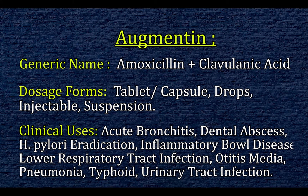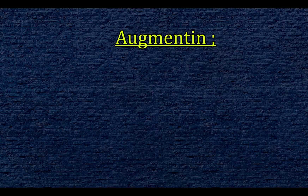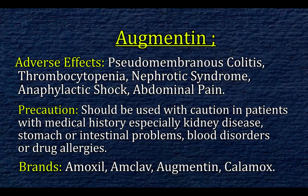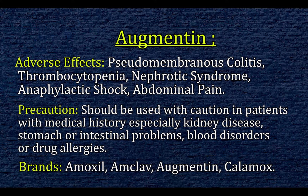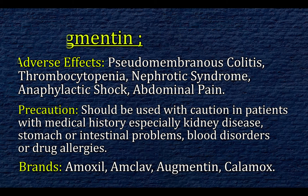Otitis media, pneumonia, typhoid, urinary tract infection. Adverse effects: pseudomembranous colitis, thrombocytopenia, nephrotic syndrome, anaphylactic shock, and abdominal pain. Precaution: should be used with caution in patients with medical history, especially kidney disease, stomach or intestinal problems, blood disorders, or drug allergies. Brands: Amoxiclav, Augmentin, Calamox.